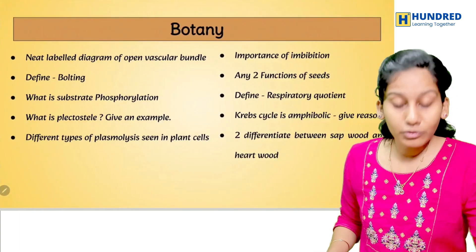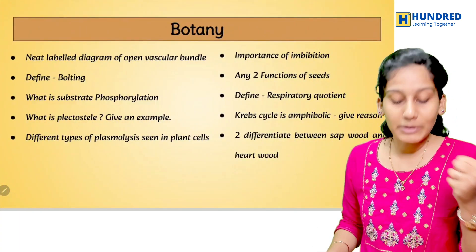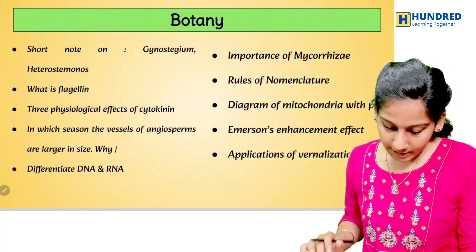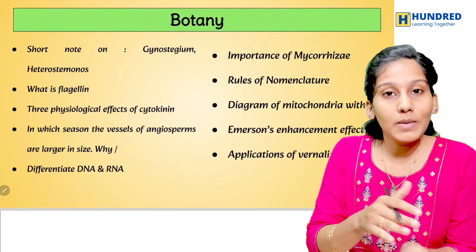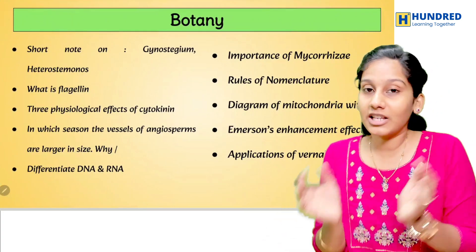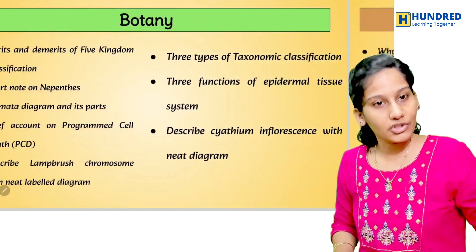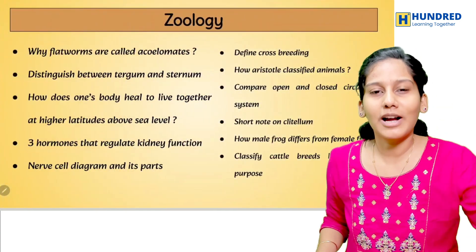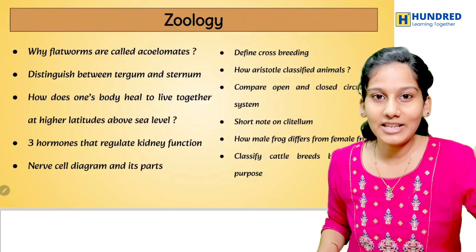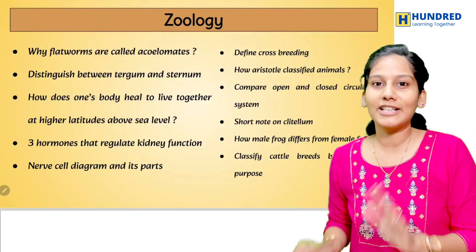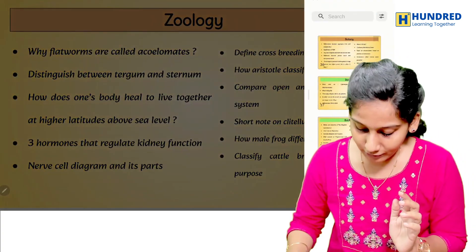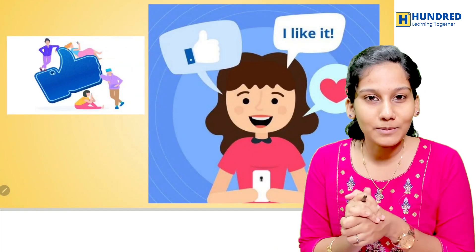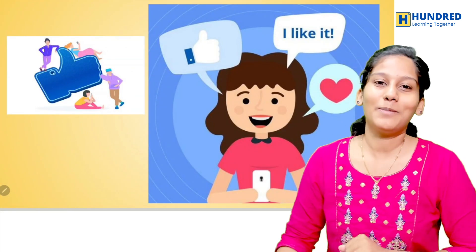Two marks and three marks questions on topics like vision and bolting are very important. Once two marks and three marks are covered, you can start reading the five-mark questions. In this video there is a complete set of PDFs — take the PDFs and start reading. You can find all the material and theory from here. All the best for your exams, guys. See you in the next video. Bye-bye.